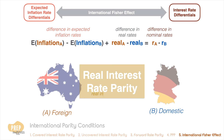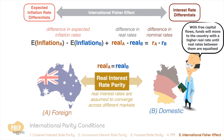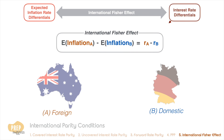Under a condition known as real interest rate parity, real interest rates are assumed to converge across different markets. This is based on the idea that with free capital flows, funds will move to the country with a higher real rate until real rates between them are equalized. Taking the Fisher relation and real interest rate parity together gives us the international Fisher effect, where the difference in nominal interest rates between two countries should equal the difference between their expected inflation rates.